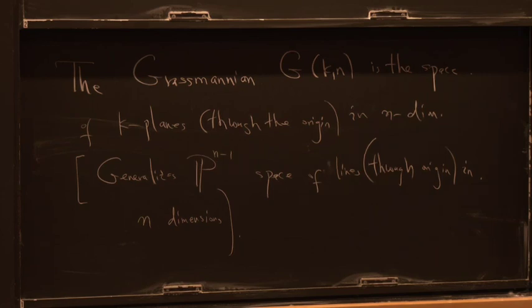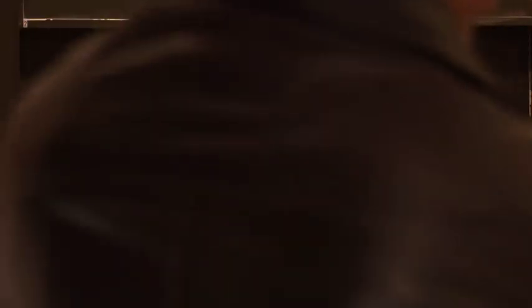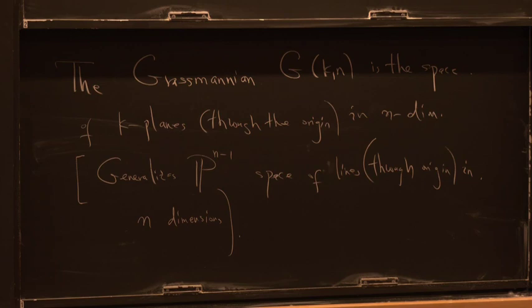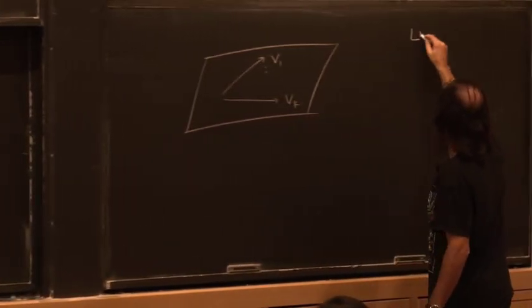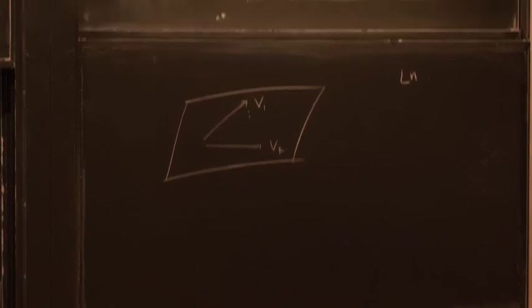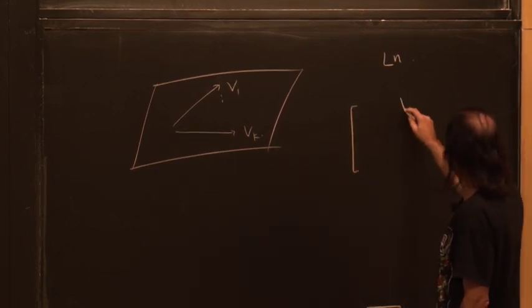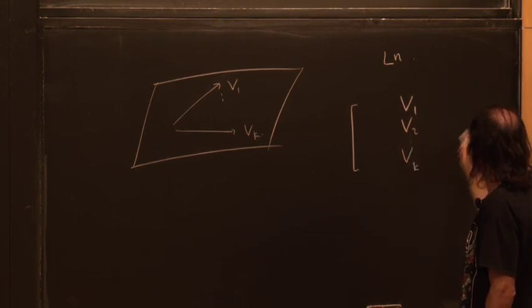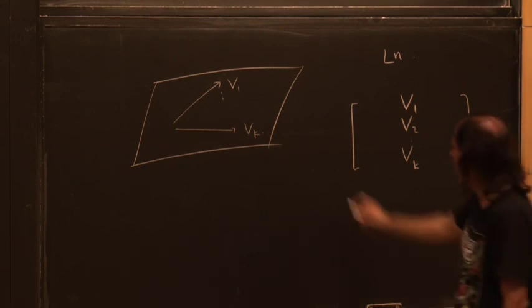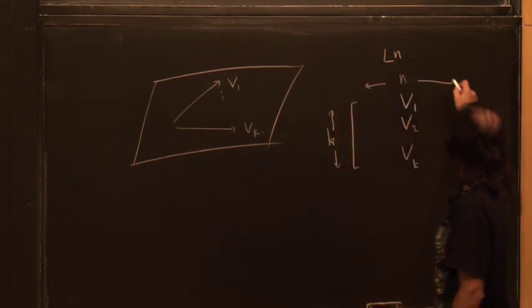To specify a k-plane in n dimensions, I just have to give you k n-dimensional vectors, and the span of those vectors is the plane. I'd have some vector v1 up to some vector vk in an n-dimensional space, and the span of those vectors gives me the k-plane. In formulas, I give you the vectors v1 through vk, and if I stack them together, I have a k-by-n matrix.